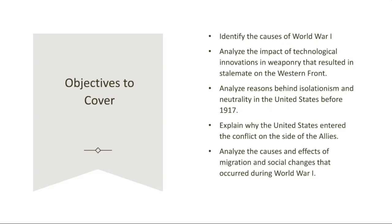The Western Front of World War I witnessed unprecedented technological innovations in weaponry that resulted in a devastating stalemate. Rapid-firing machine guns, long-range artillery, and poison gas transformed the battlefield into a hellish landscape of trench warfare. These advancements made it incredibly difficult for troops to advance across no man's land, contributing to the prolonged deadlock that characterized the Western Front.